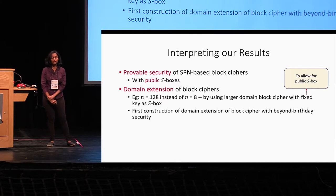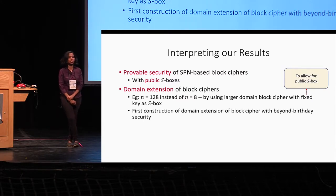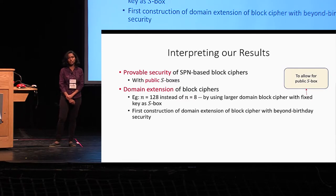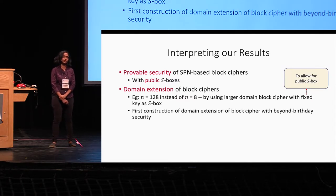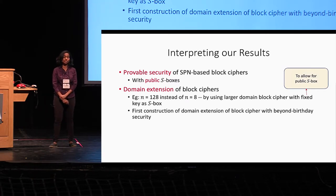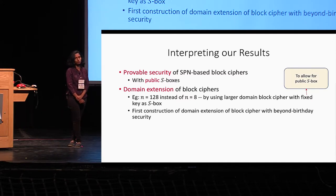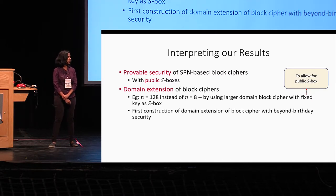Regarding how to interpret our results: first, this shows provable security of SPN-based block ciphers with public S-boxes, which has not been analyzed before. It also has implications for domain extension of block ciphers — for example, if you consider the S-box to be instantiated by a block cipher itself, such as AES with a fixed key, this results in a wide block cipher implying domain extension. A fixed-key block cipher serving as a public random permutation is essential in our setting. To our knowledge, this is also the first construction of domain extension of block ciphers with beyond-birthday-bound security.